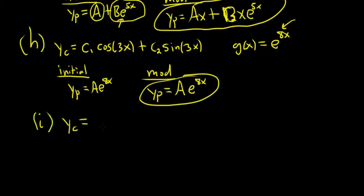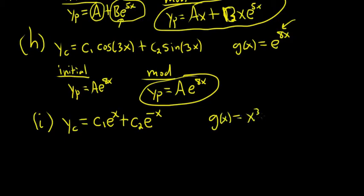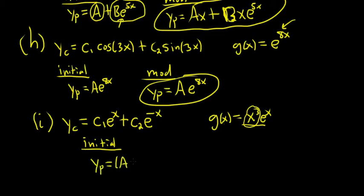Example I. Yc equals C1 e to the x plus C2 e to the negative x. And g of x is x cubed e to the x. The initial is based solely on the right-hand side. This is a cubic, so you need a full cubic in your guess: ax cubed plus bx squared plus cx plus d, all times e to the x. That's our initial.